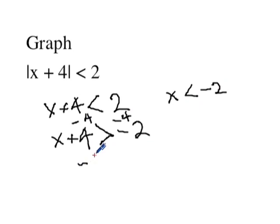On the bottom, I get x is greater than negative 6. So you can see we've got a range of x values here. They're between negative 2 and negative 6. So let's graph that.